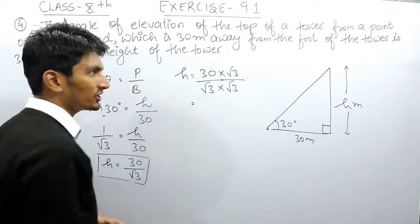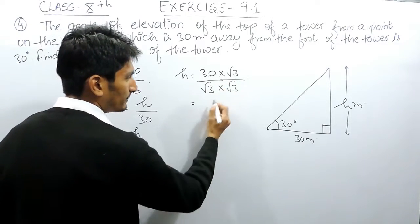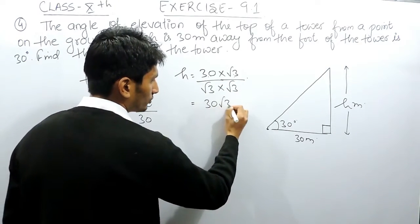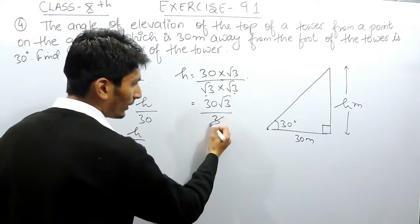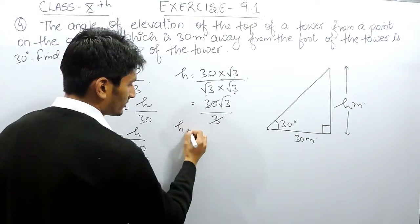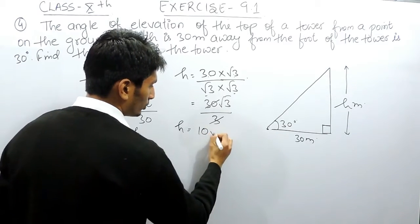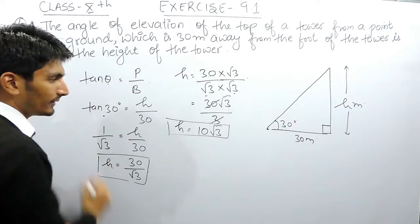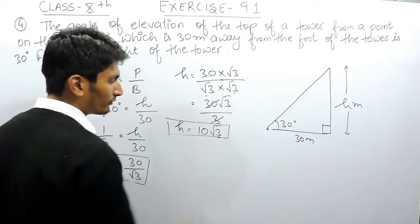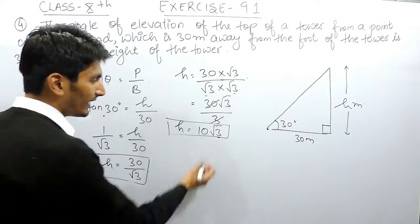30 multiplied by root 3 will become 30 root 3, and root 3 multiplied by root 3 is 3. I can cancel this, so h will become 10 root 3. The height will be equal to 10 root 3. If you substitute the value of root 3 as 1.73 and multiply it with 10, you will get your answer in decimal.